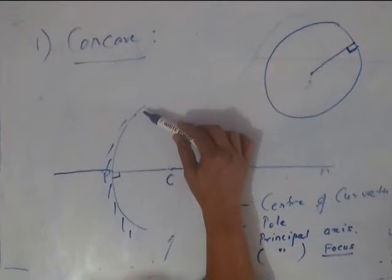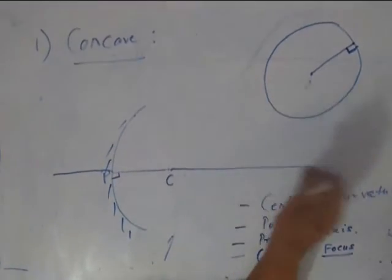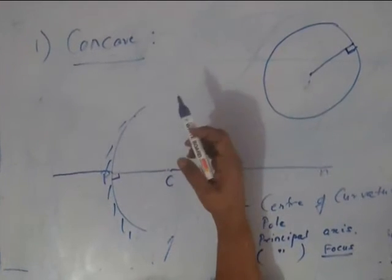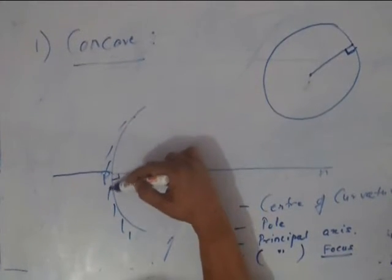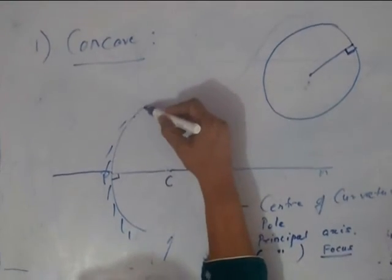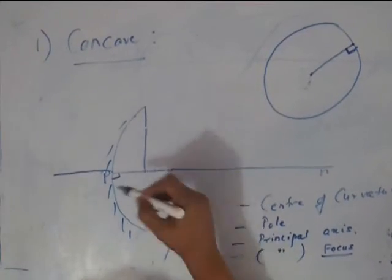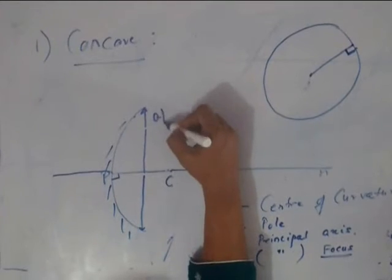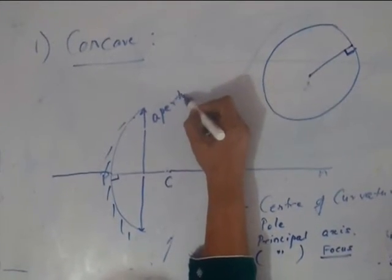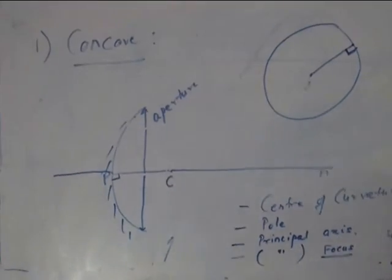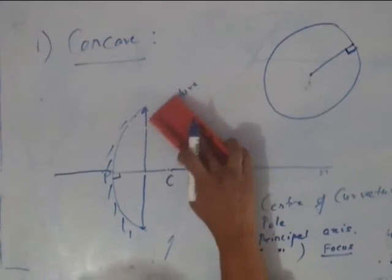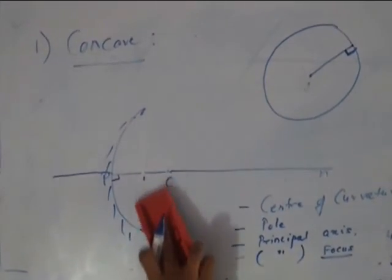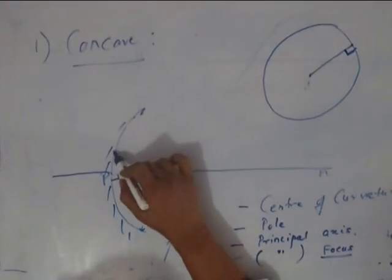You will need to have a concave mirror with you, they are easily available in the market. Take one which has a little larger aperture. By aperture we mean this distance, this distance from here to here is aperture, A-P-E-R-T-U-R-E. So normally we deal with small aperture mirrors, but for this experiment you can take a little bigger one. Let the sun rays fall on them.